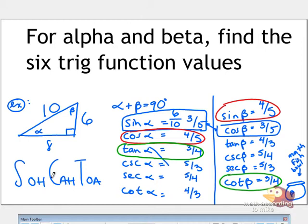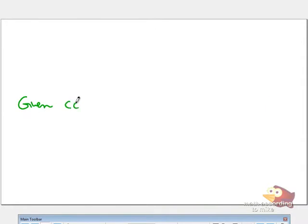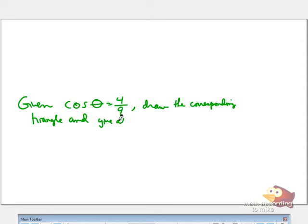But in some cases, you might be asked to find the picture. Given that the cosine of theta is 4 ninths, is that the same value that I have written down on the paper? Good. Yeah. Thank you. Draw the corresponding triangle. And give all six trig function values.